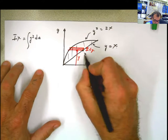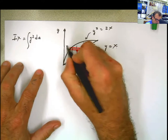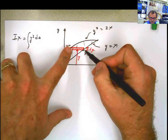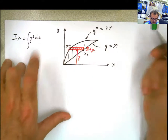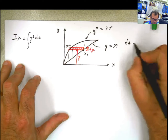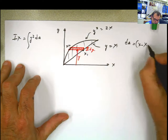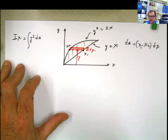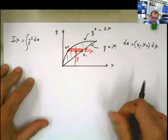You can call this x1 if you want to, and this one x2. So basically this distance is going to be x1 minus x2. Multiply by dy is going to be my differential of area. Differential of area is going to be x1 minus x2 multiplied by dy. You got it.